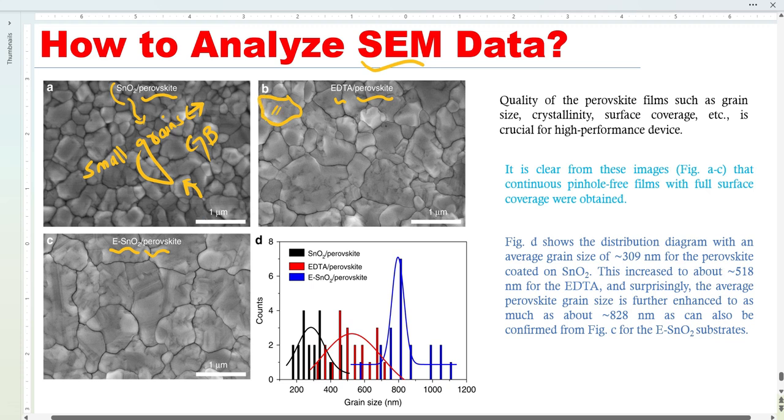We can see that the grain sizes increase. So by default, when we increase the grain sizes, the grain boundaries will start decreasing, right? Very interesting. If we do not have this SEM, how will we know that the grain size increases?